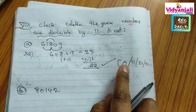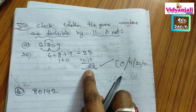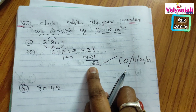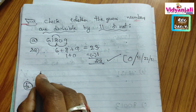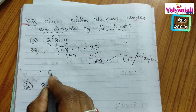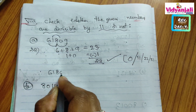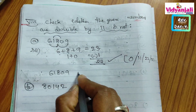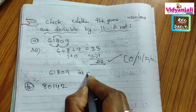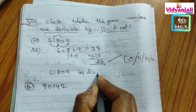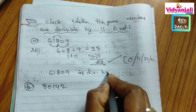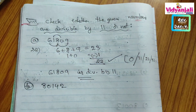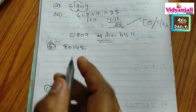22 is a multiple of 11: 11 times 2 is 22. Therefore we can say 61,809 is divisible by 11.